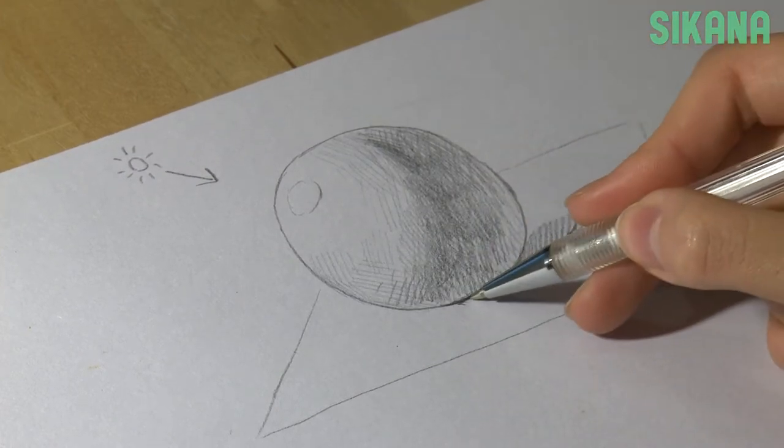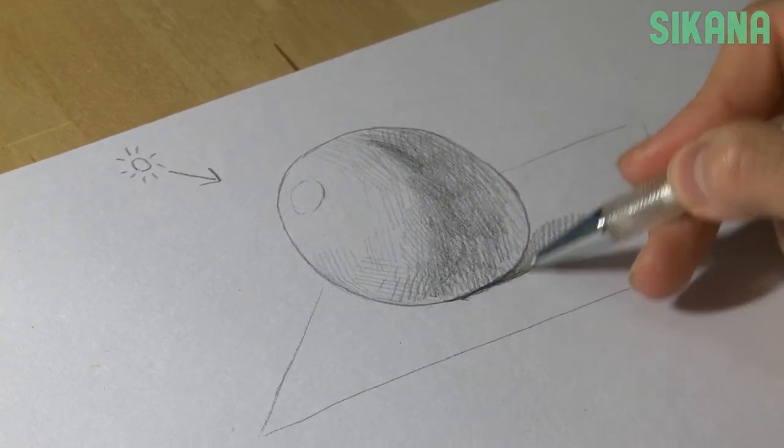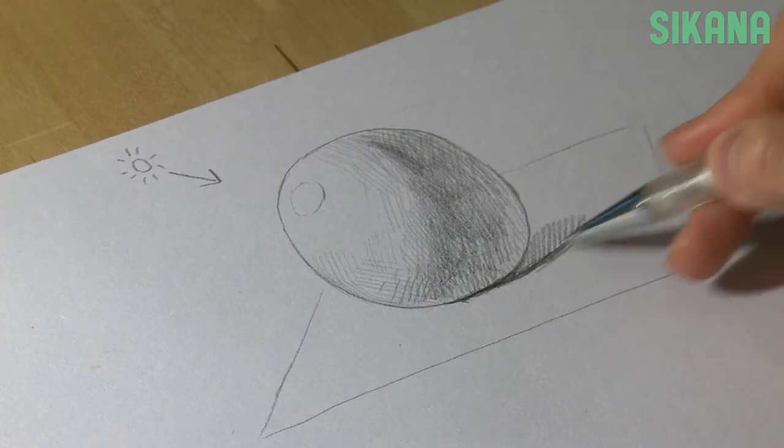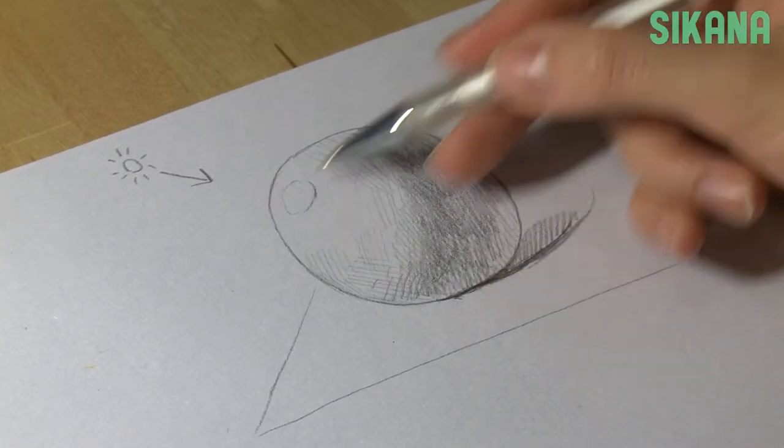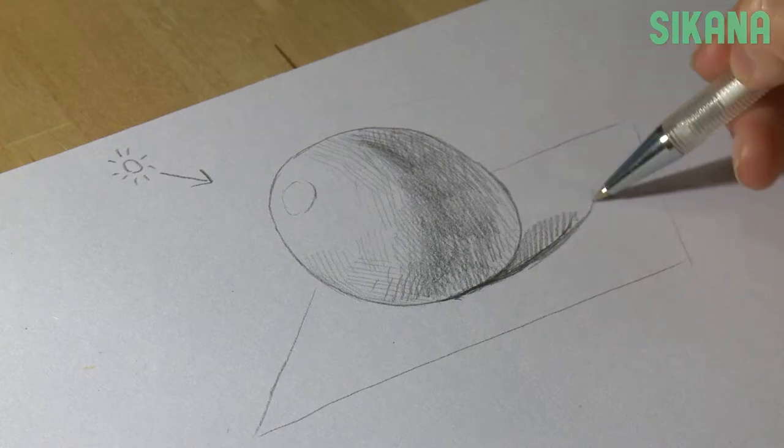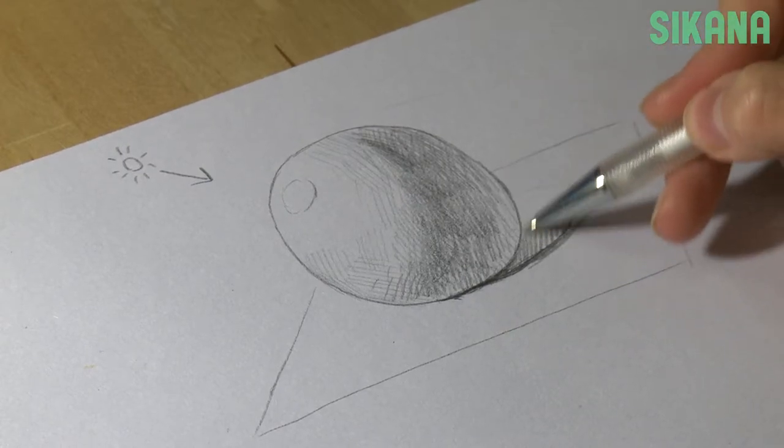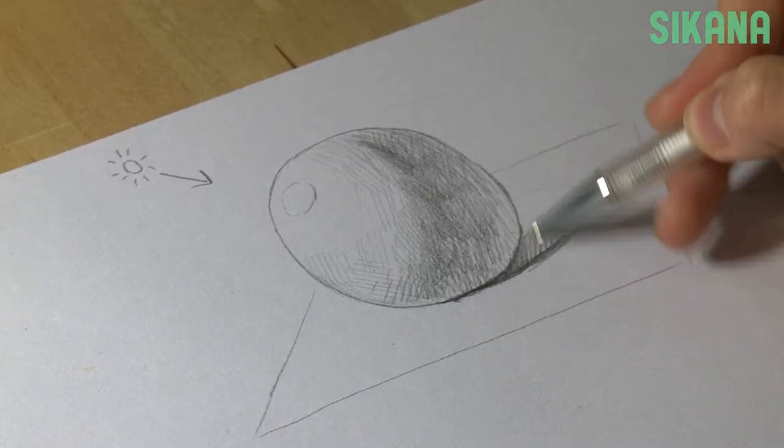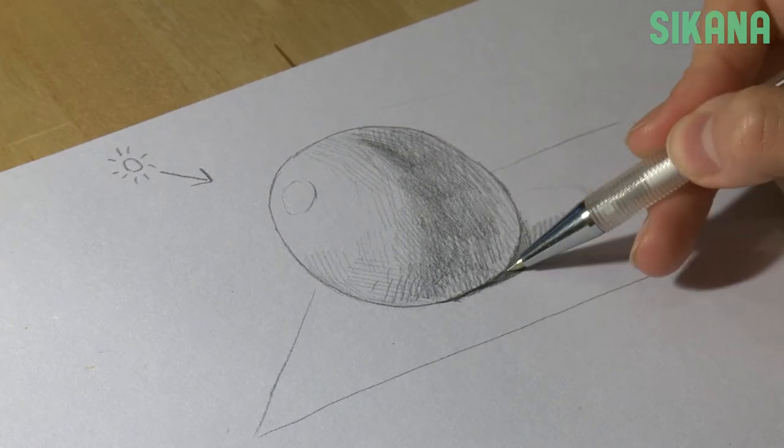The shade closest to the surface will be the darkest one since it connects the ball and the ground. We want to make the shadow circular since it's taking the shape of the ball. Now, we're going to draw the shade progressing from dark to light.